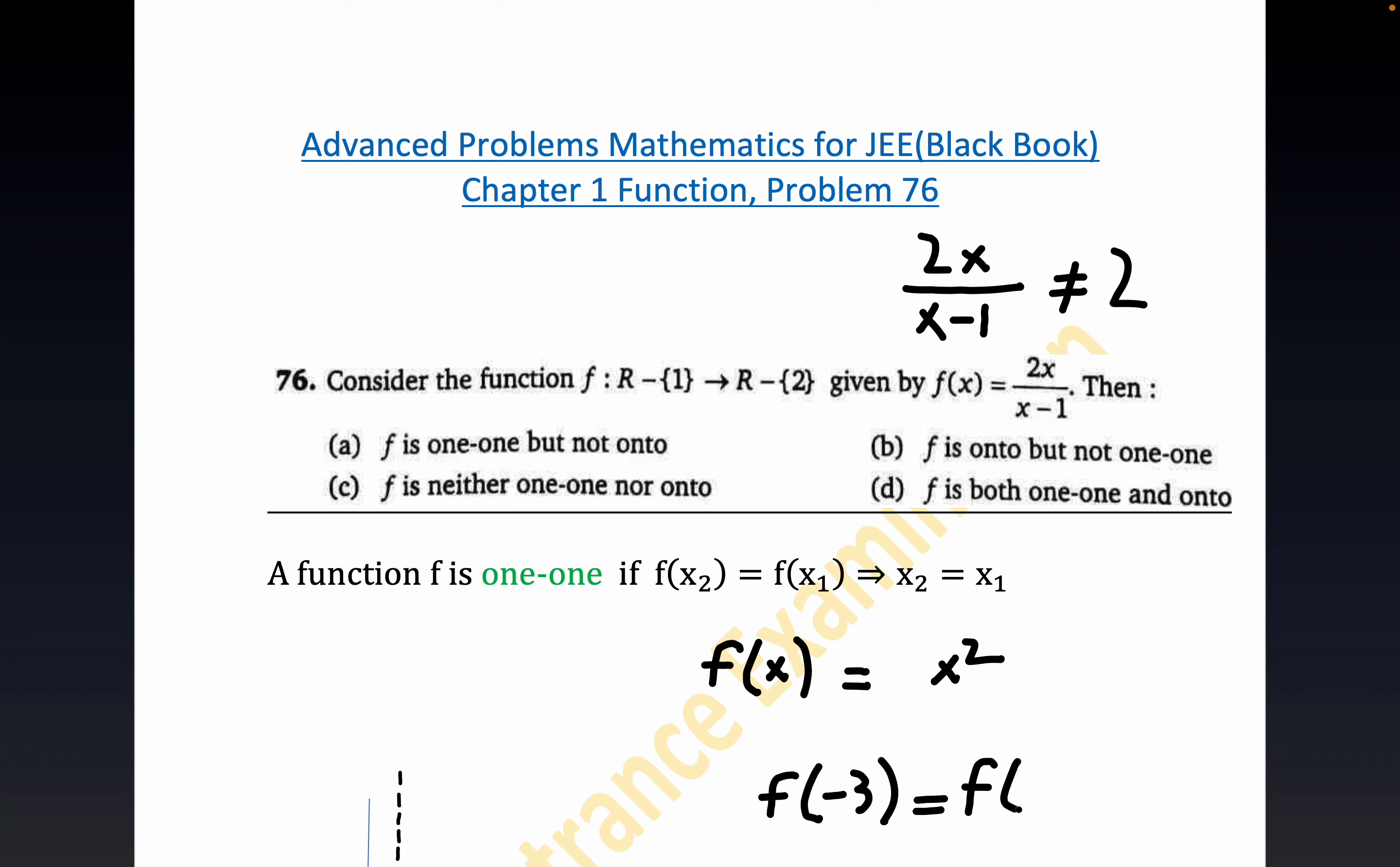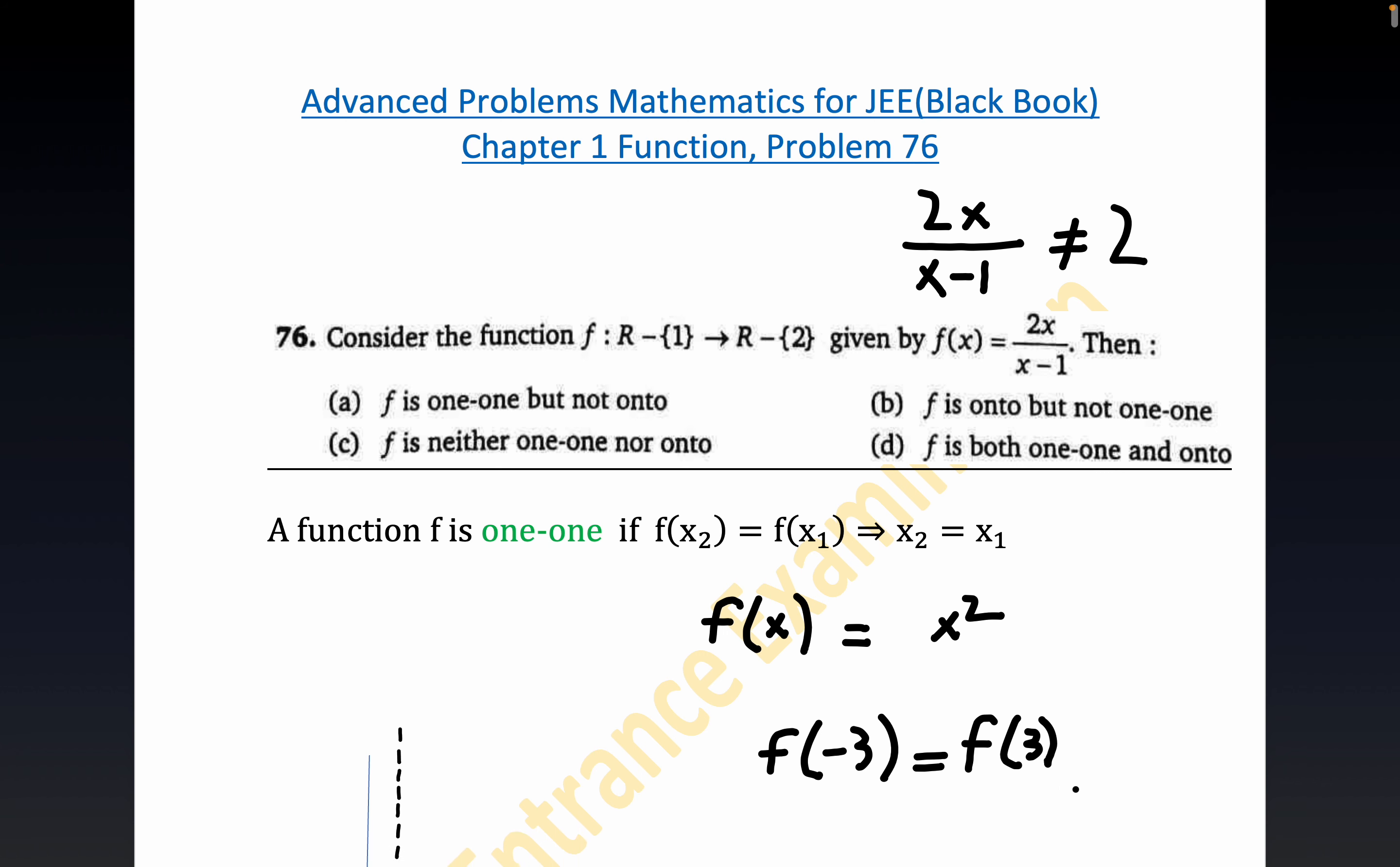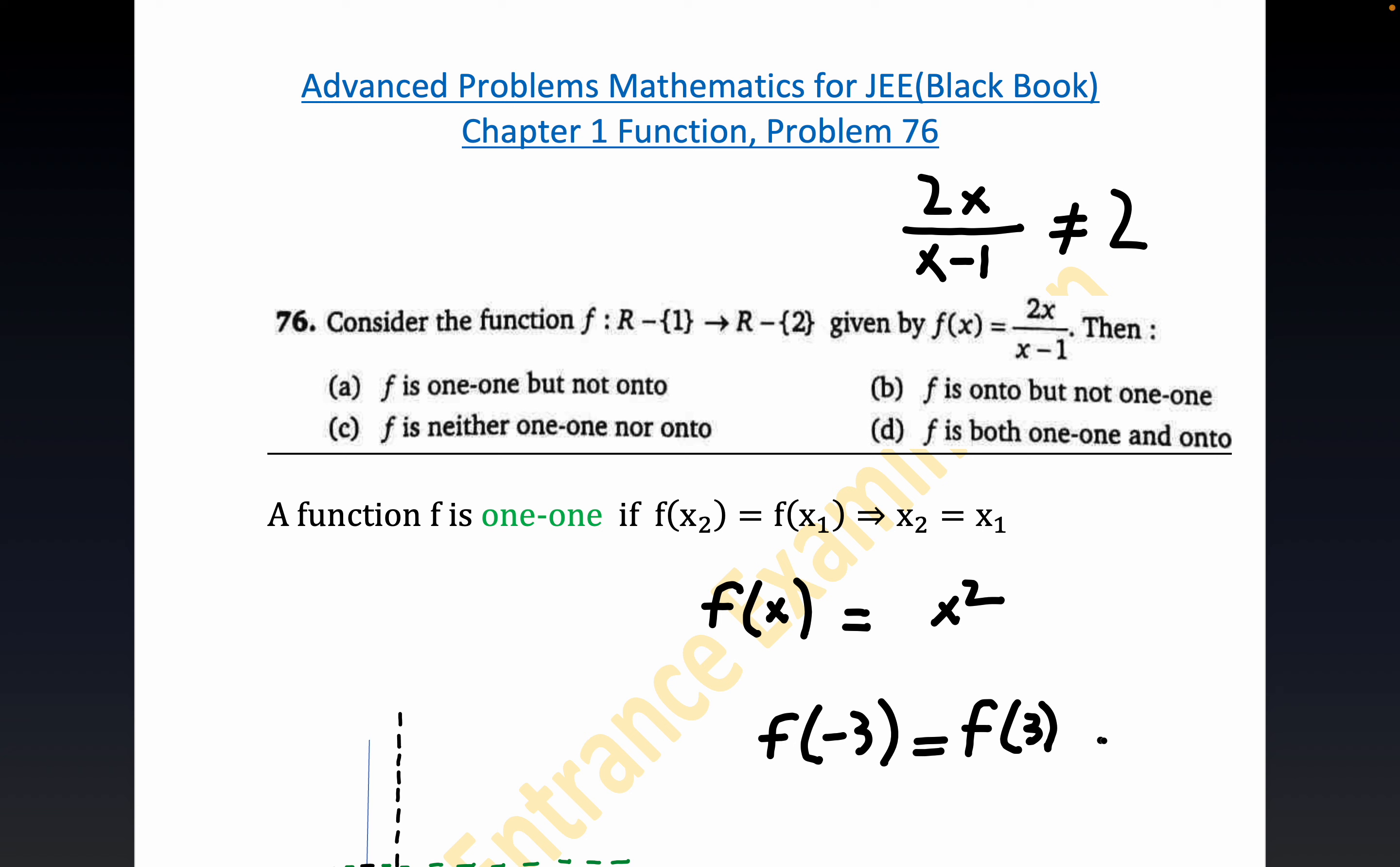So this first part of the definition of one-to-one would correspond to this part right here. But notice minus 3 clearly doesn't equal 3. So we can see that f of x equals x squared is not a one-to-one function unless you restrict the domain. Just from the definition of function you can see this is not one-to-one.